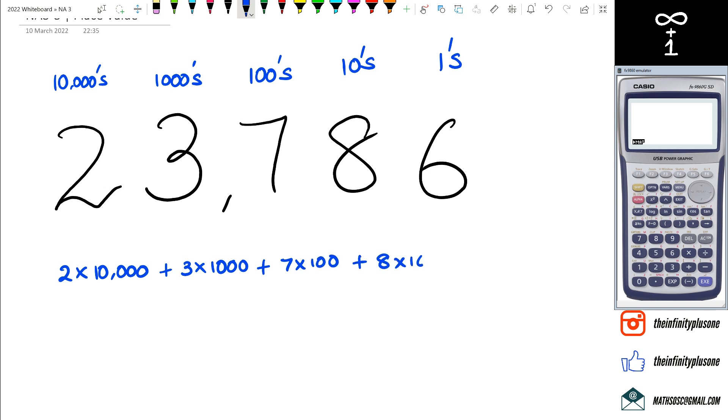Plus eight lots of 10 and plus six lots of one. So if we think about it, we're going to get 20,000 plus 3,000 plus 700 plus 80 plus 6, and when we put it all together we're going to get 23,786.